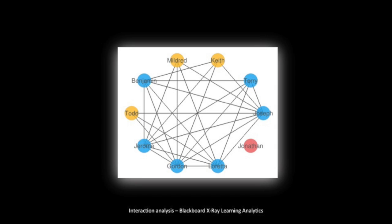One example is Blackboard X-Ray Learning Analytics, which shows a simple mapping between all students in the class based on activity in online forums. You can see Jonathan there has no connections — the lecturer could identify that and perhaps ask one of the more active students to bring Jonathan into the conversation, or bring him in themselves. It's a quick way of seeing whether there might be an issue with that person.